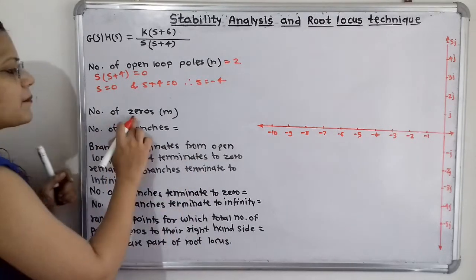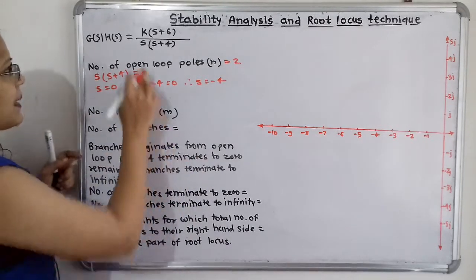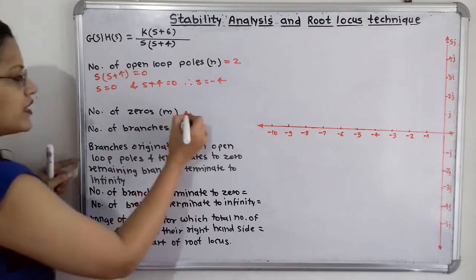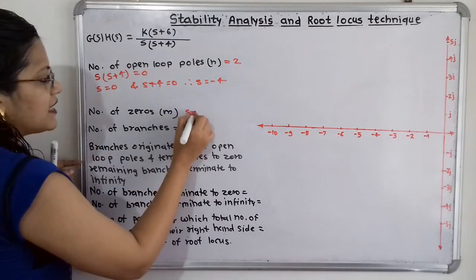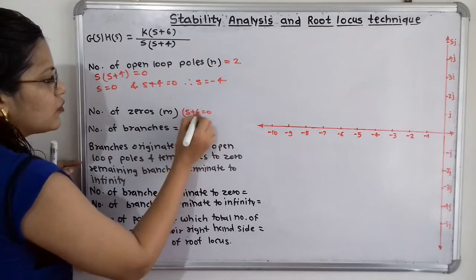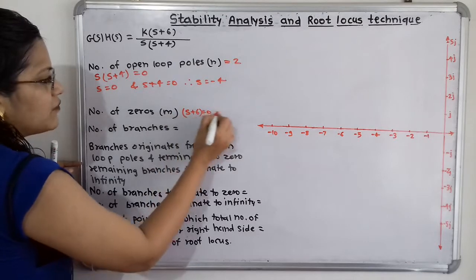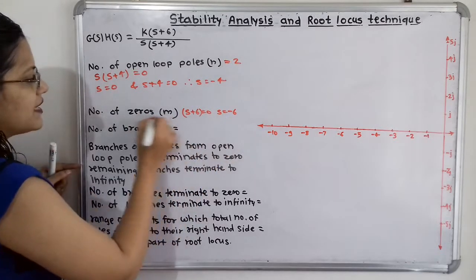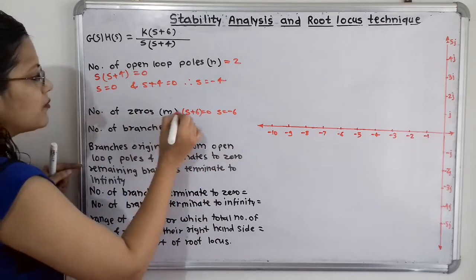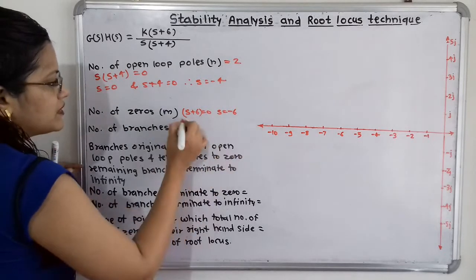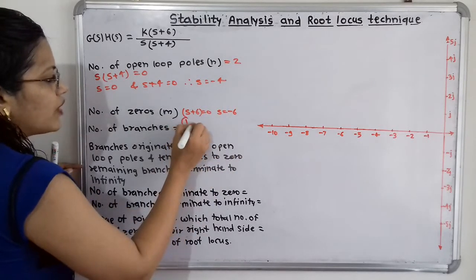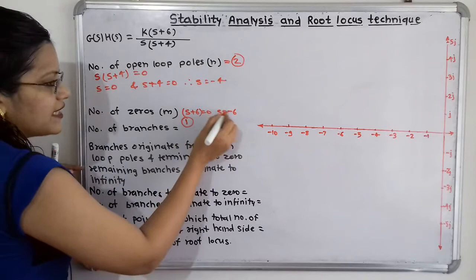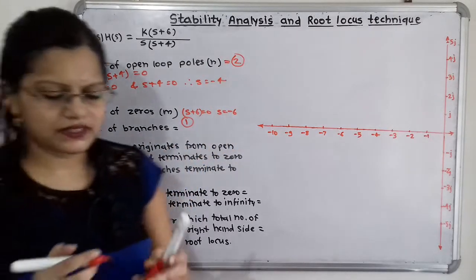Now what is the number of zeros? Notation is M. We take the numerator in the form of s: s+6=0, therefore s=−6. So the number of zeros M is equal to 1, and the zero is at s=−6.